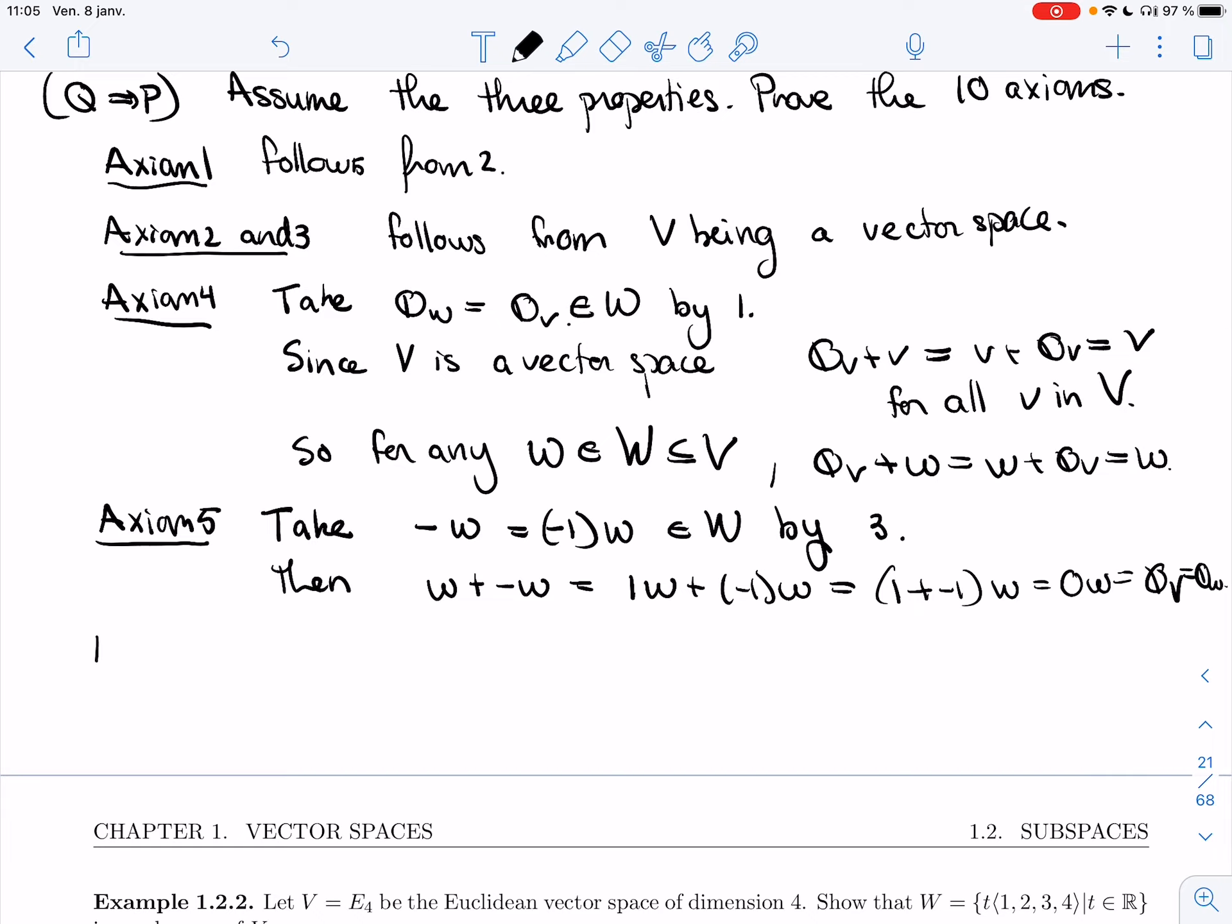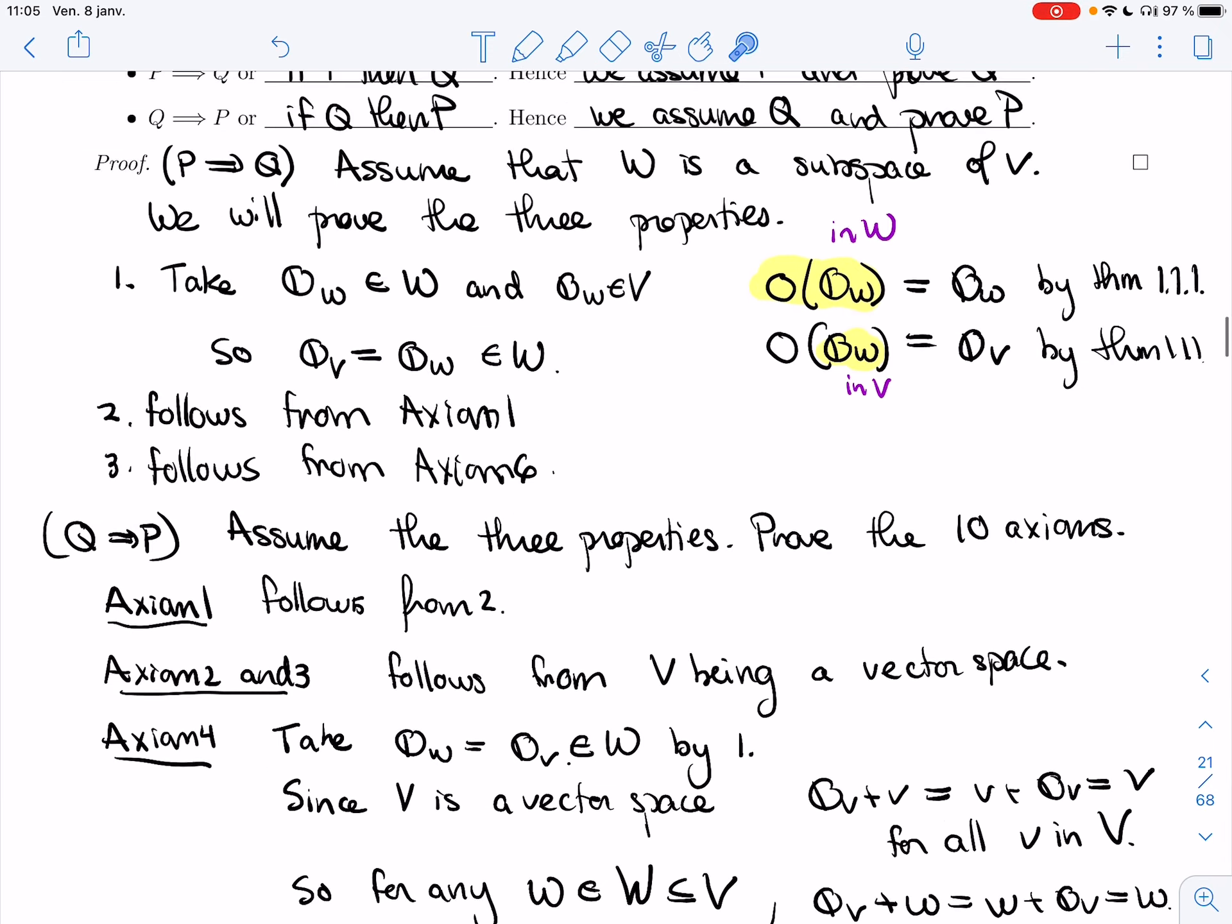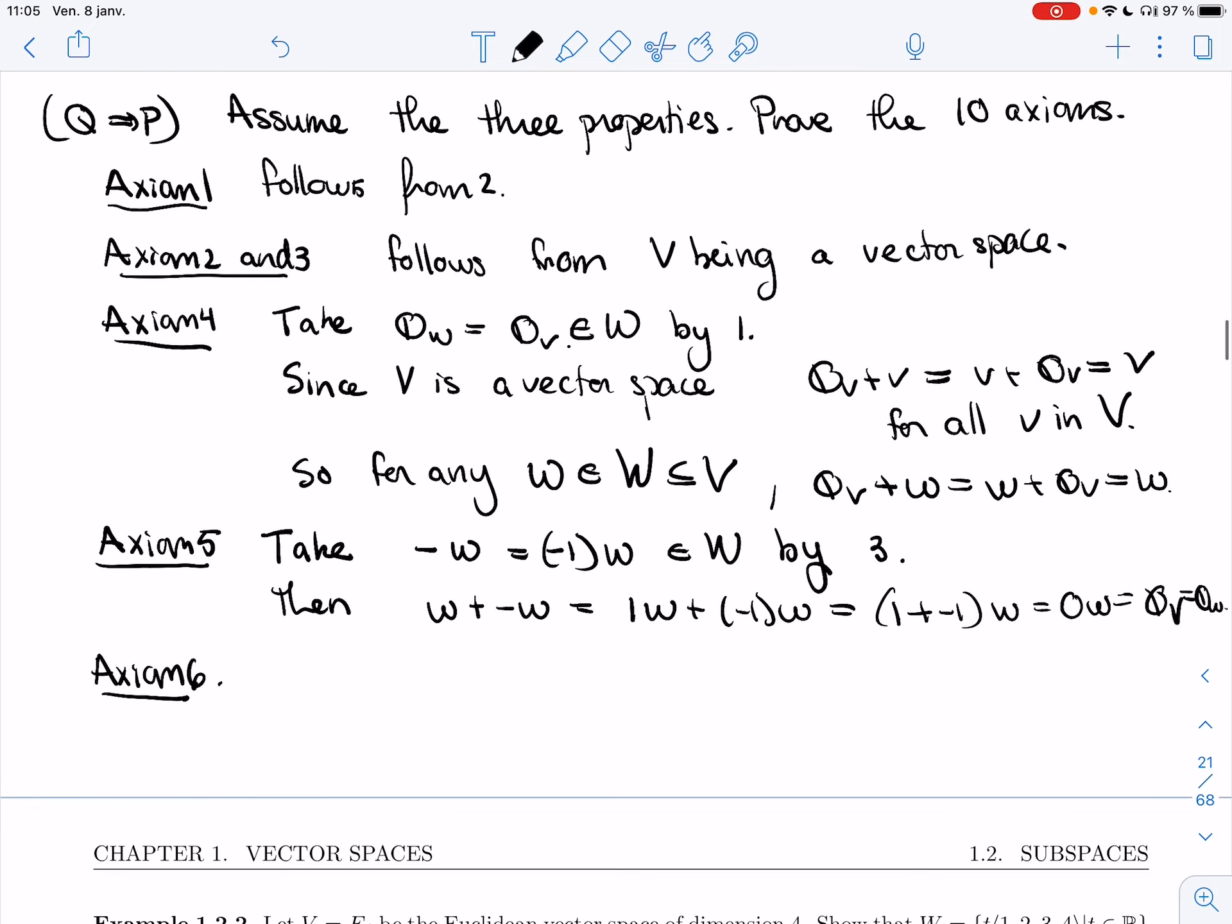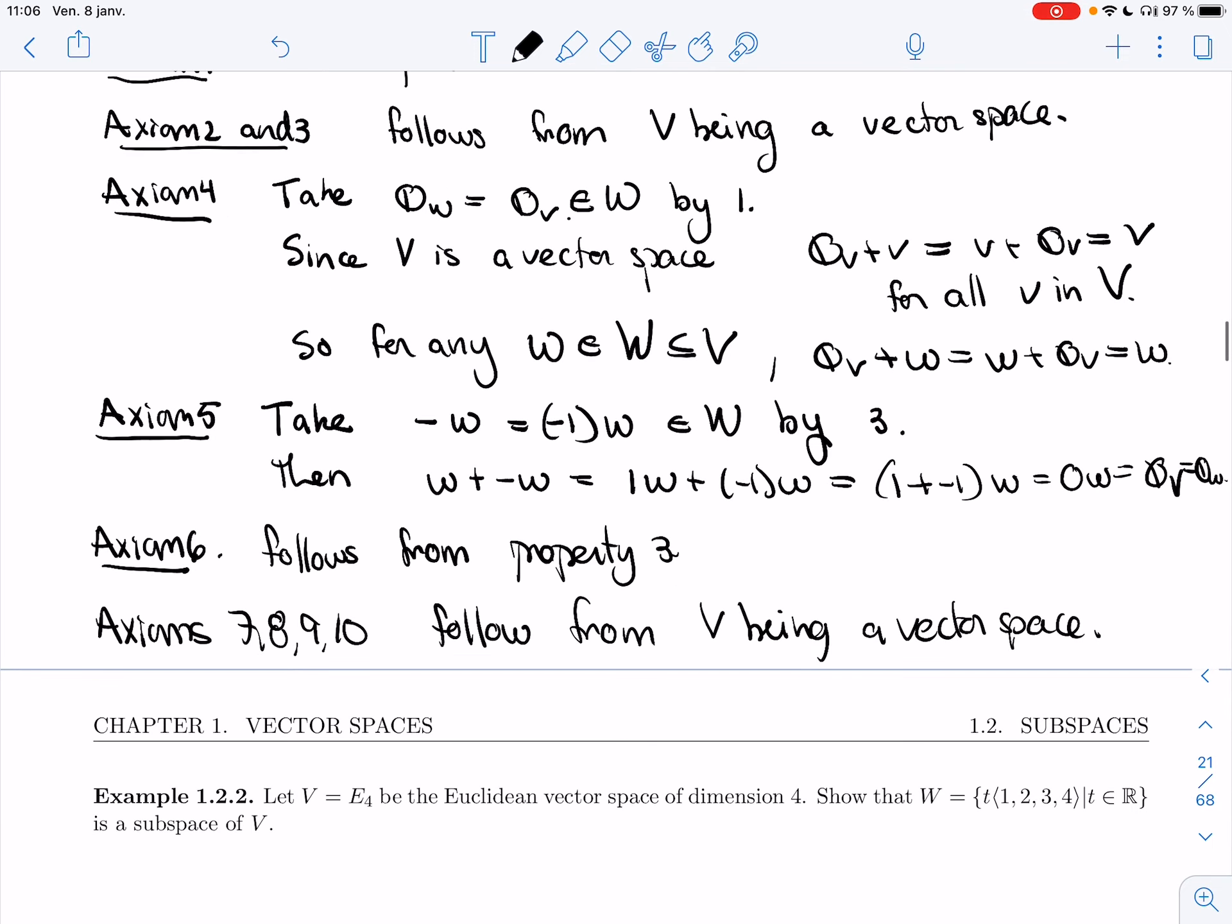Axiom 6. Well, axiom 6 was about closure of multiplication. That's what we assume in property 3. So, done. And then axioms 7, 8, 9, and 10 follow from V being a vector space. And we're done.